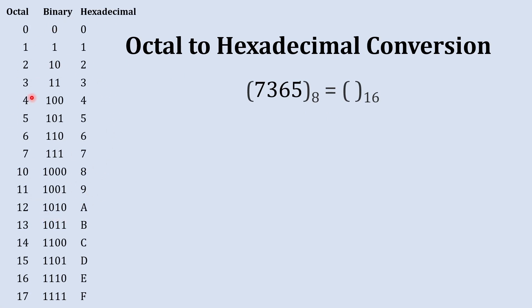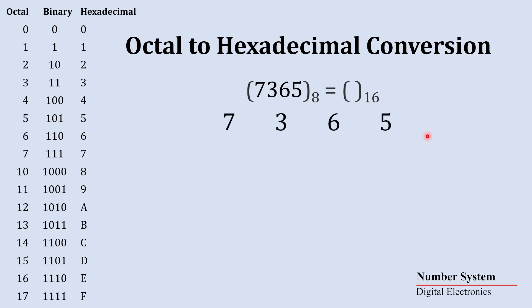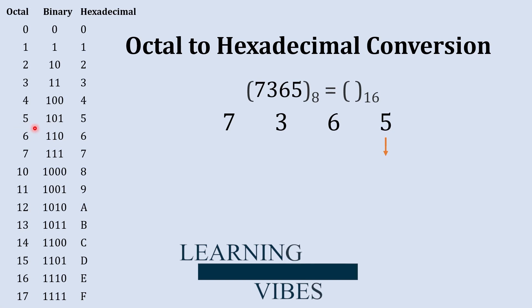This table is really important in order to convert octal to hexadecimal. As a first step, we are going to write this number and then convert this octal number into a binary number. We will find the binary equivalent using this table — the binary equivalent to octal five is 101.